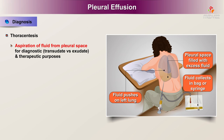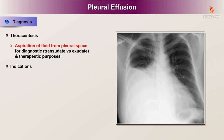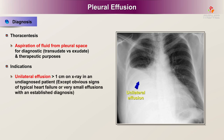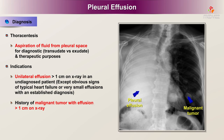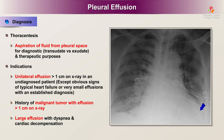Thoracentesis is the aspiration of fluid from the pleural space for diagnostic purposes, such as differentiating transudate versus exudate, and/or for therapeutic purposes. Indications include any new unilateral effusion of more than 1 cm on X-ray in an undiagnosed patient, except in patients with obvious signs of typical heart failure or very small effusions with an established diagnosis; history of malignant tumor with effusion of more than 1 cm on X-ray; and large effusion with dyspnea and/or cardiac decompensation.